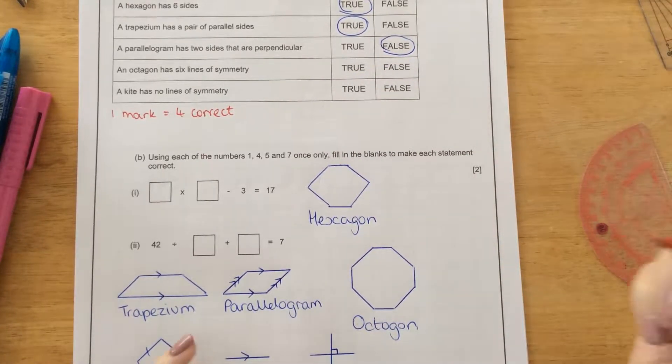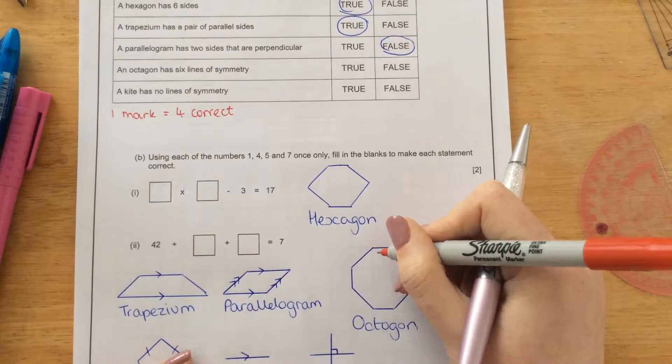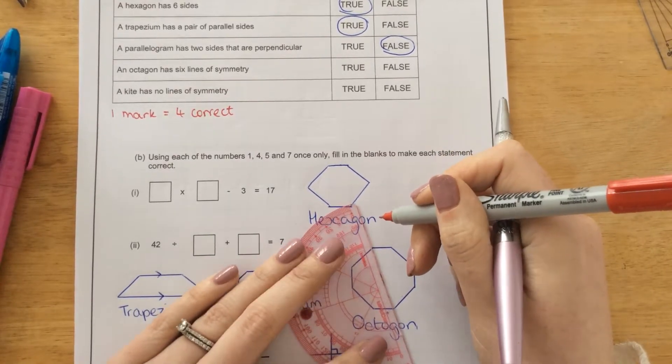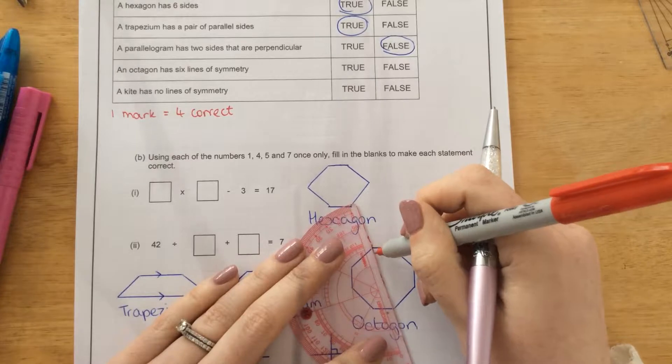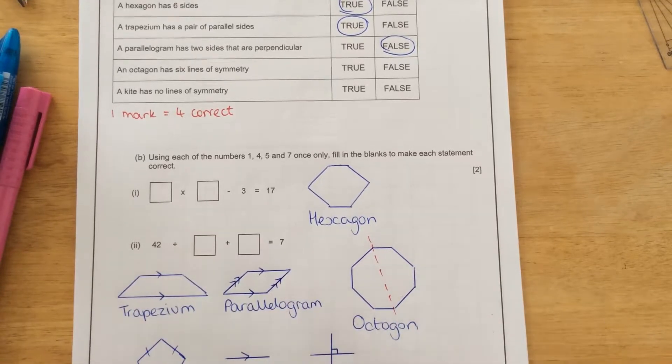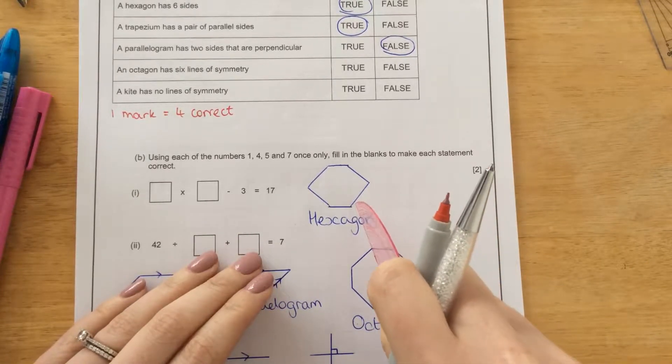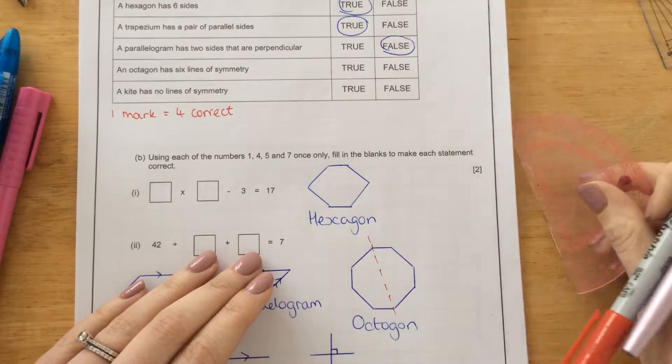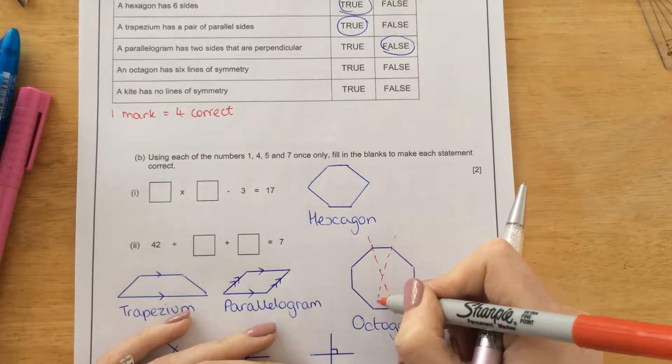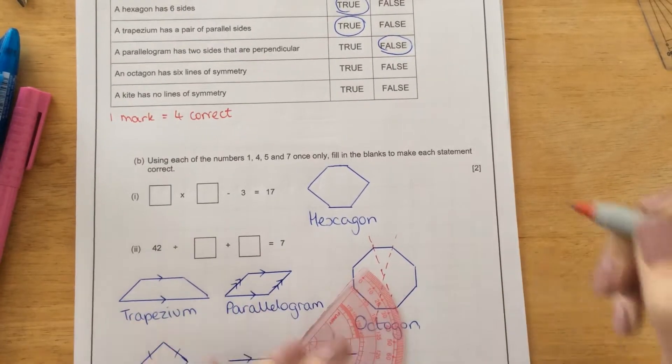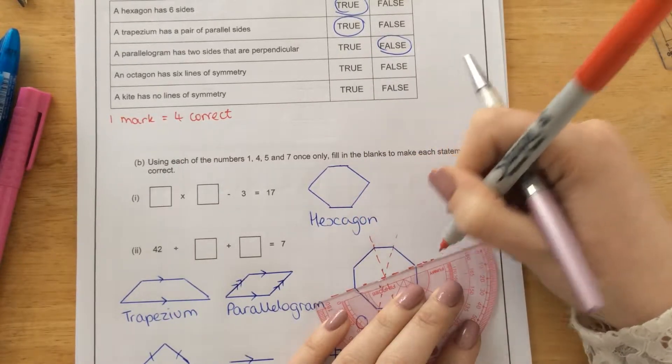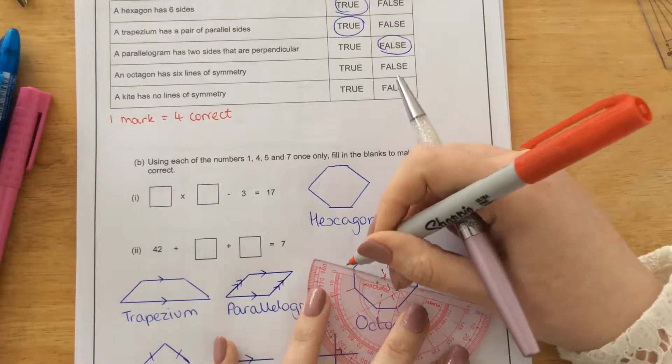This is an octagon here. If I start by drawing the lines of symmetry through the vertices, so I could draw a line here. And this side would be exactly the same. It would be reflected in this side. I could do the same here. And here. And through the next line.